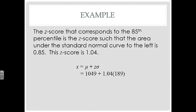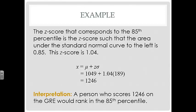We plug in mu = 1049, Z = 1.04, and sigma = 189 into the formula X = mu + Z·sigma to get the student's GRE score. That student scored 1246 on the GRE, meaning a person who scores 1246 ranks at the 85th percentile.